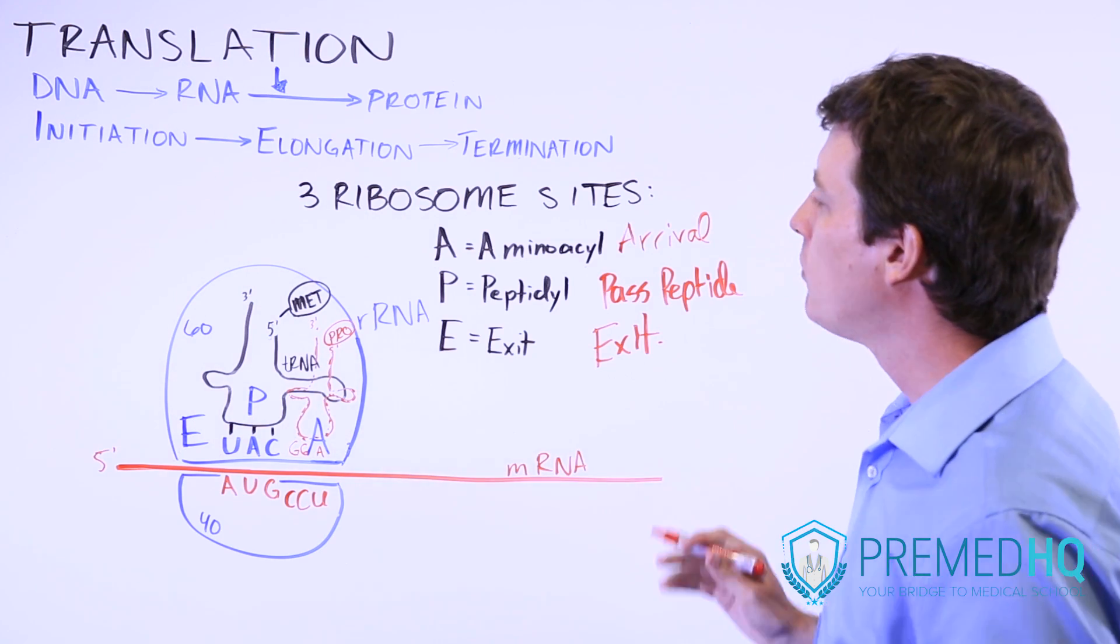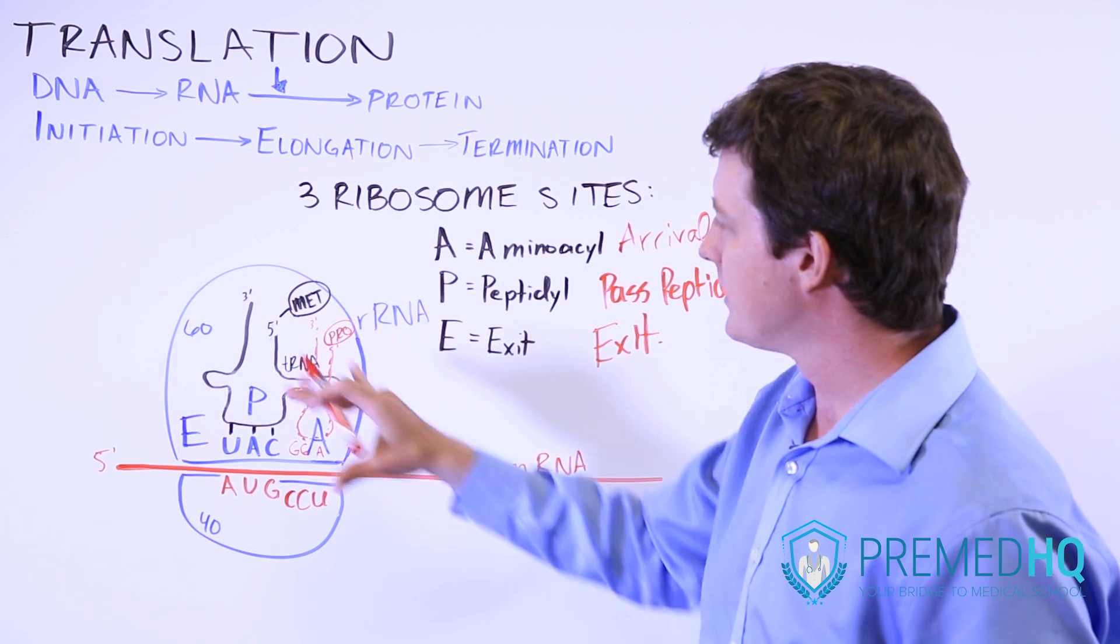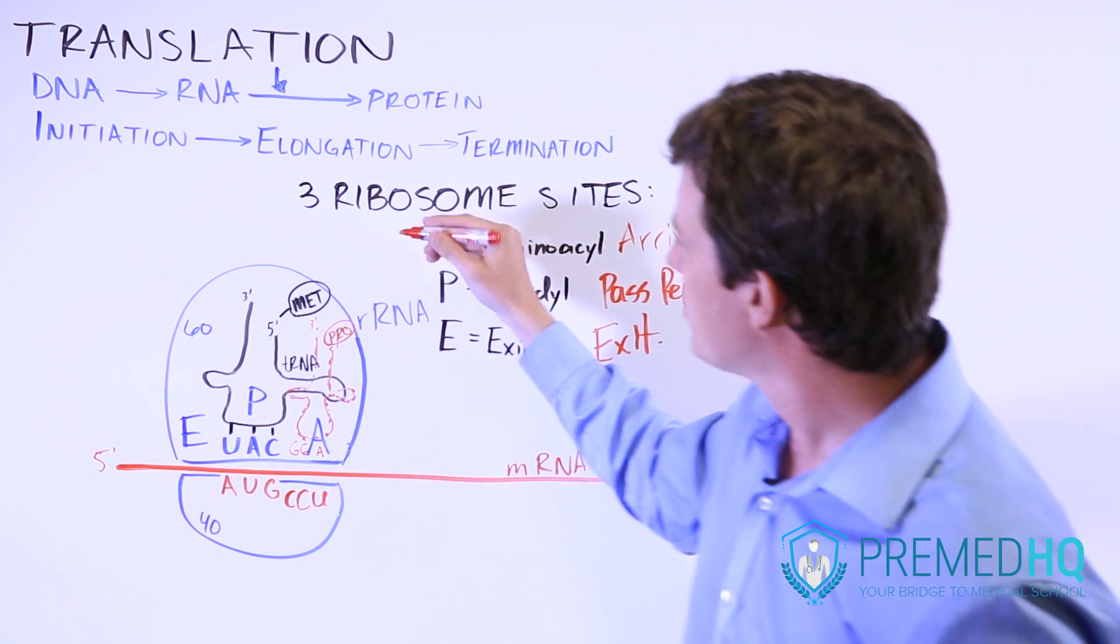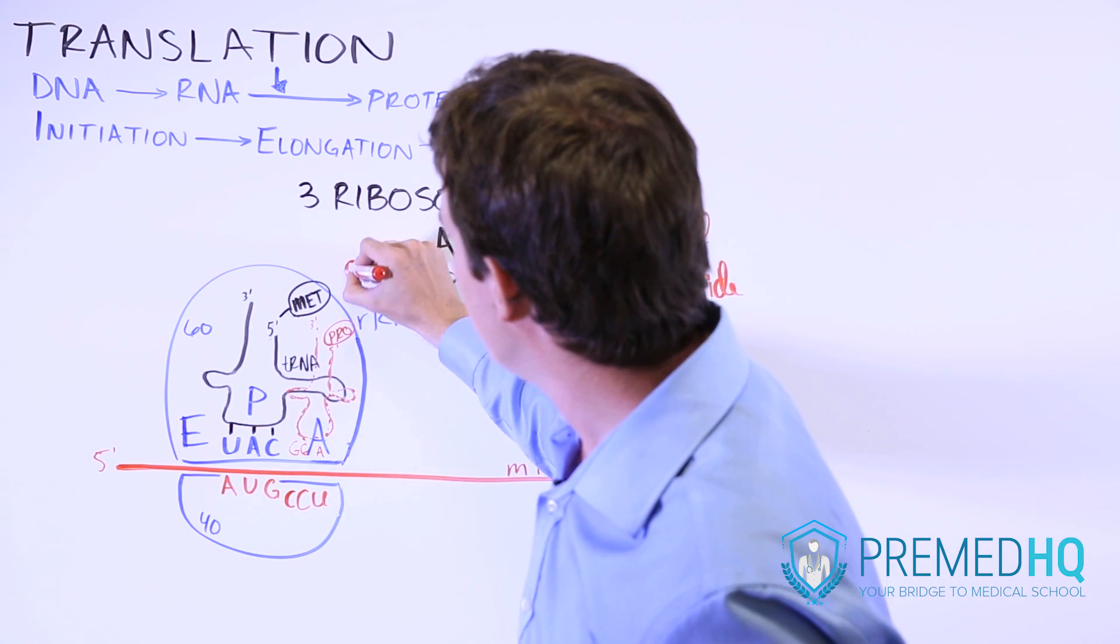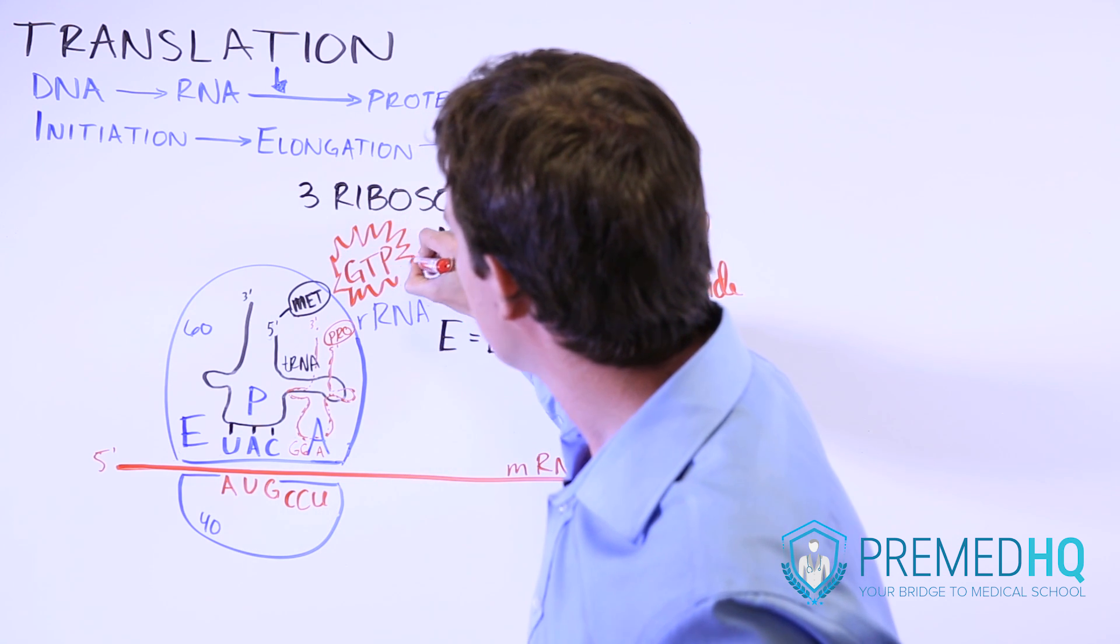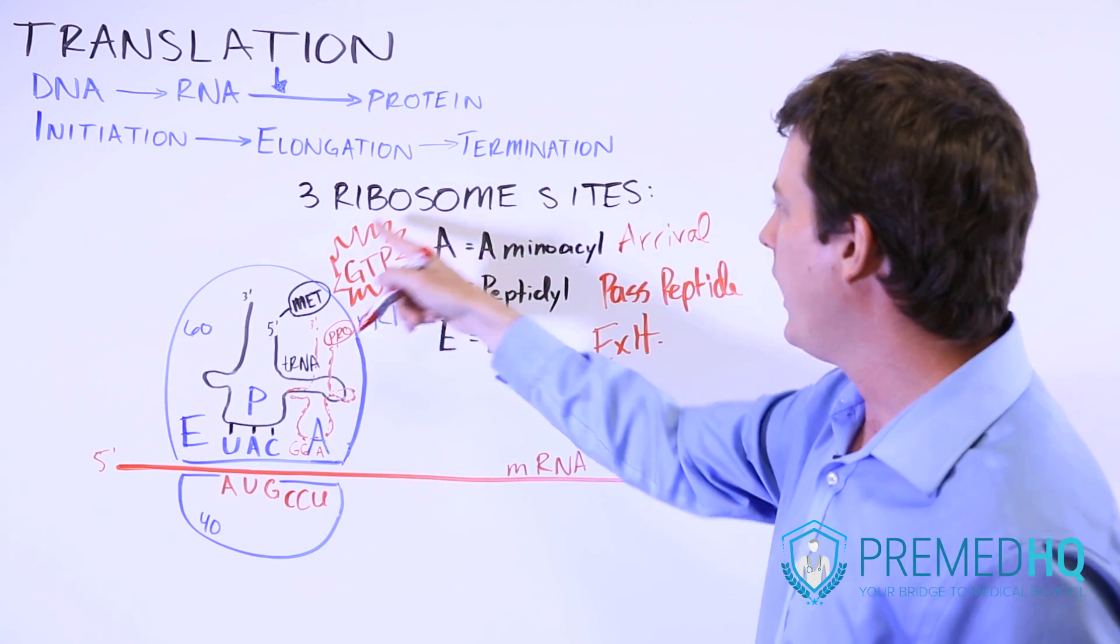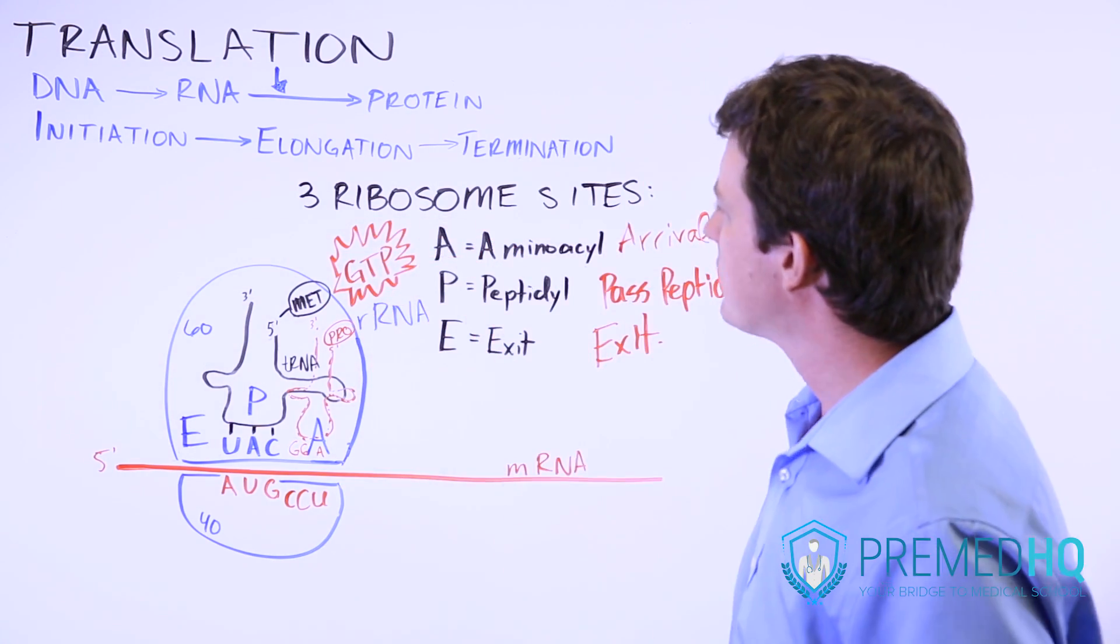And so what will happen is, because of the ribosome acting as a catalyst, you'll have a process that involves the usage of GTP. So we'll just draw a GTP there; that's a lot like ATP, it's a triphosphate with a nitrogenous base, this one is guanine here.